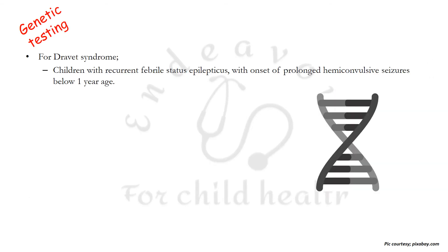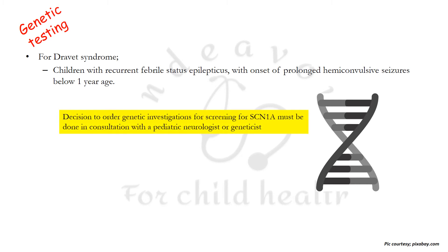Genetic testing for Dravet syndrome may be considered in patients with recurrent febrile status epilepticus with onset of prolonged hemiclonic seizures below one year of age. The decision to order screening for the SCN1A gene — implicated in Dravet syndrome — must be done in consultation with a pediatric neurologist or geneticist.